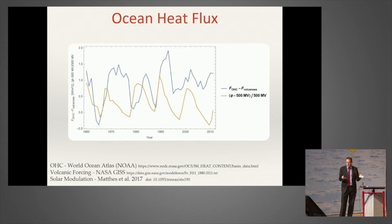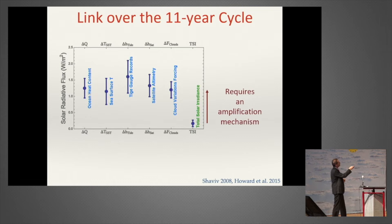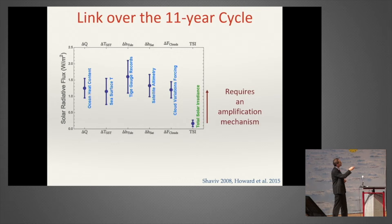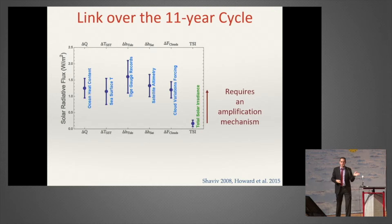These are the different records—tide gauge records, satellite altimetry, ocean heat content—and additional records with which you can quantify the sun's effects. They are all consistent with a large variation over the solar cycle. This should be compared to the size of variations expected from just the changes in total solar irradiance. That difference tells you there should be some kind of mechanism to explain why the sun has such a large effect on climate—and that's exactly what Professor Svensmark will cover in the next talk.